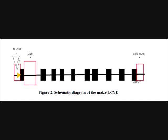Three primers have been designed so as to increase the amplification and thereby increase the beta-carotene content. The three primers designed are the SNP216 primer, the 8 base pair indel primer, and the TE287 primer.